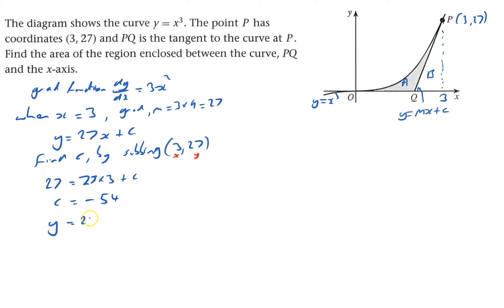So I get y equals 27x minus 54. I want to find out this value here, which is when y equals 0. So when y equals 0, that says 27x minus 54 equals 0. So 27x equals 54, so x equals 2.